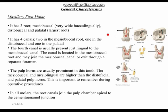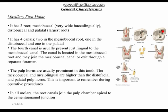The mesiobuccal root is very wide buccolingually. The maxillary first molar has four canals even though it has three roots. The mesiobuccal root has two canals — MB1 and MB2 — because it is wide buccolingually. The distobuccal root has one canal, and the palatal has one canal. The fourth canal in the mesiobuccal root is usually located just lingual to the mesiobuccal canal, labeled MB1 and MB2. The distobuccal and palatal each have one canal.